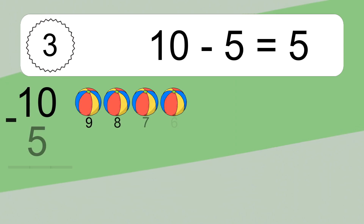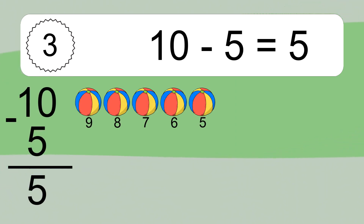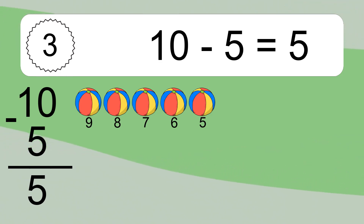10 minus 5 equals what? 10 minus 5 equals 5. Let's count it: 9, 8, 7, 6, 5.